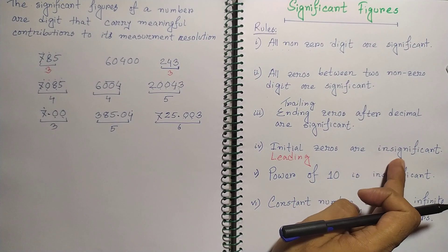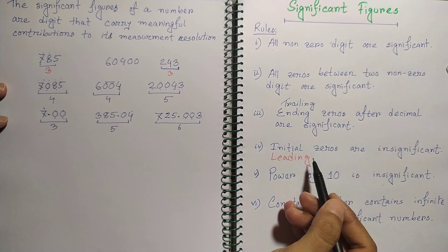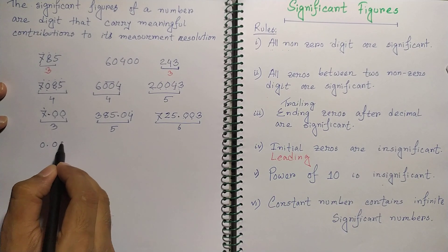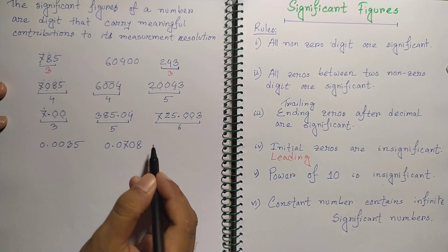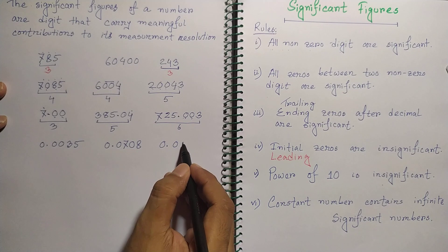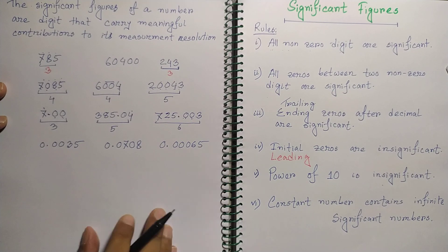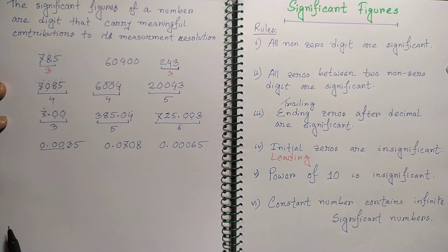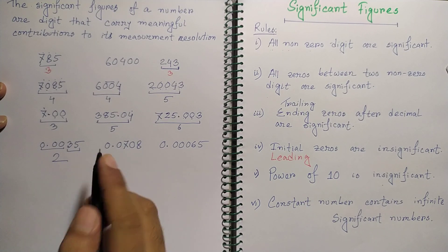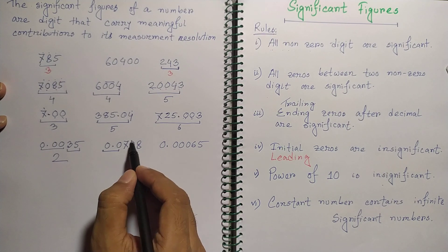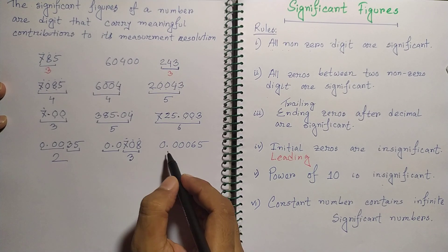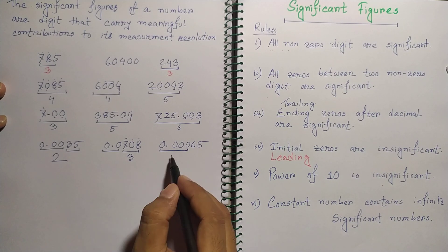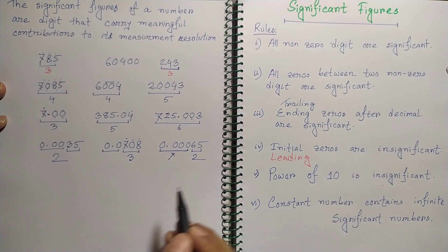Rule four: the initial or leading zeros are insignificant. For example, 0.0035 has only 2 significant figures. In 0.0708 the zero between 7 and 8 is significant, giving 3 significant figures, but the leading zeros are not counted. And 0.00065 has only 2 significant figures.